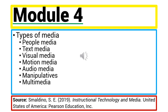In people media, we have resource speakers who are knowledgeable or experts in the field. For text media, these are the books, newspapers, and letters. While visual media contain icons, logos, charts, and slides in science experiments. Motion media are videos and movies.